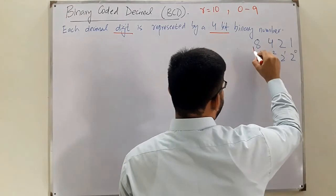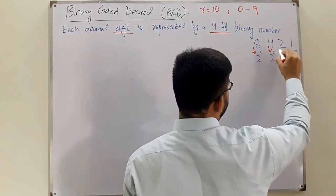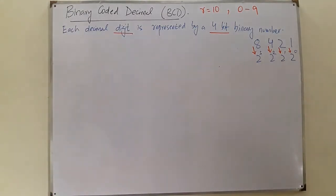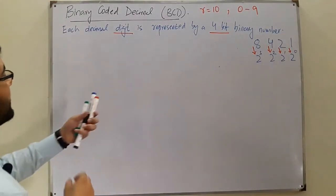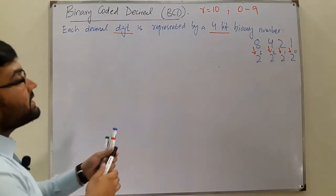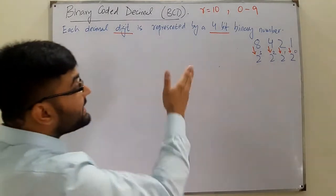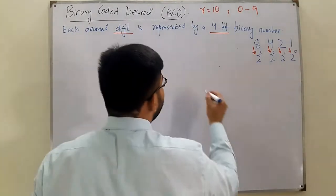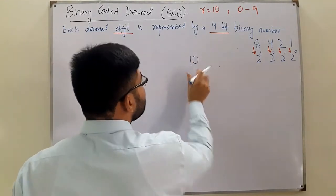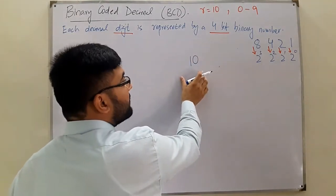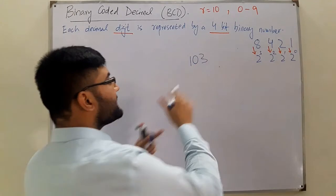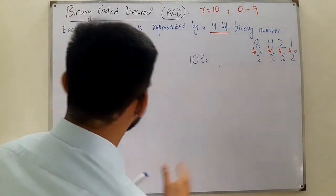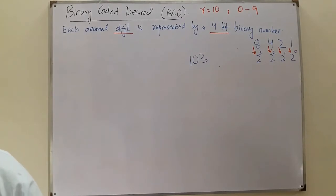So this means we can represent up to 2 to the power 3 in four bits. Now, we can only represent from 0 to 9. If we have, say, 10 or 123, those are decimal numbers, not decimal digits. Decimal digits are only from 0 to 9.